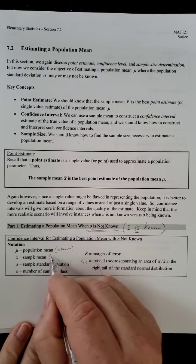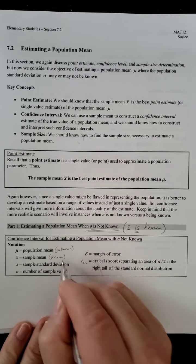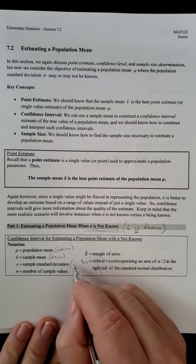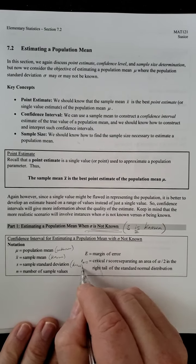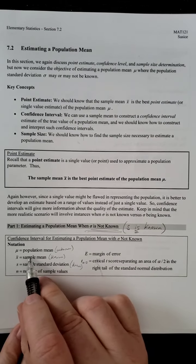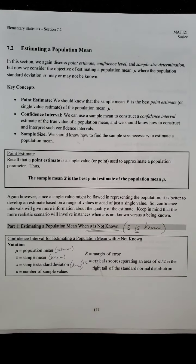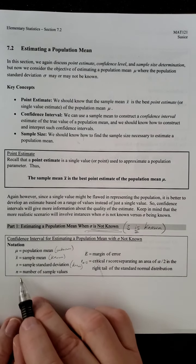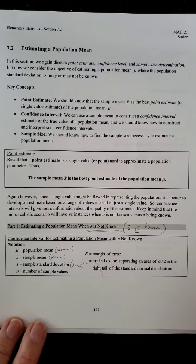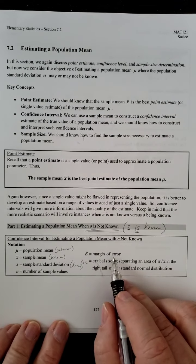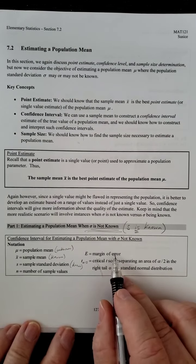Sample mean, this will be known. Sample standard deviation, this will be known. So we're going to know the sample information. We don't know the population stuff, which is generally going to be the case. N is our sample of values. E is our margin of error. We're going to see a formula in a little bit.